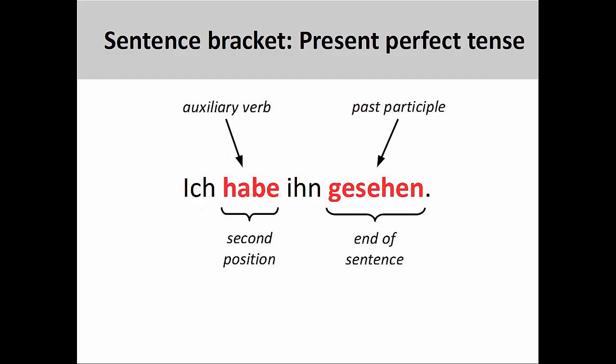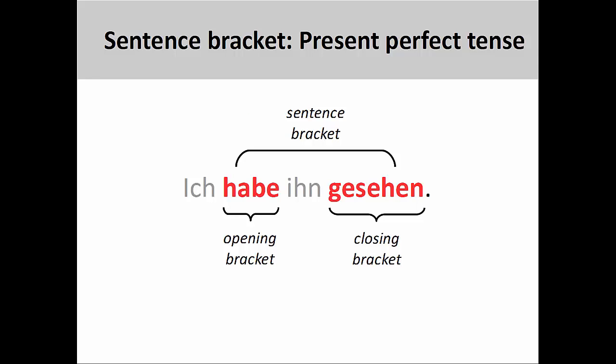The sentence bracket also makes an appearance in the present perfect tense, which is what we would use when talking about events that happened in the past. In the sentence ich habe ihn gesehen — I have seen him — the auxiliary, or helping verb, habe, appears in the second position, and the past participle, gesehen, appears at the end of the sentence. In this sentence, the helping verb forms the opening bracket, and the past participle forms the closing bracket.